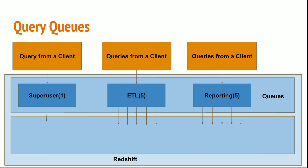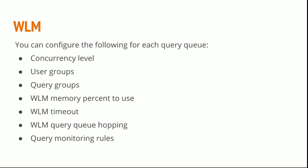In this example I am showing how to create an ETL queue with 5 concurrency levels and a reporting queue with 5 concurrency levels. So my ETL jobs will have enough memory and 5 queue slots to run my queries, and reporting will have enough memory and 5 query slots to read from Redshift. You can configure the following values: concurrency level, user group, query group, memory, and the timeout for any query or to hop a query, and you can monitor the rules of the query.